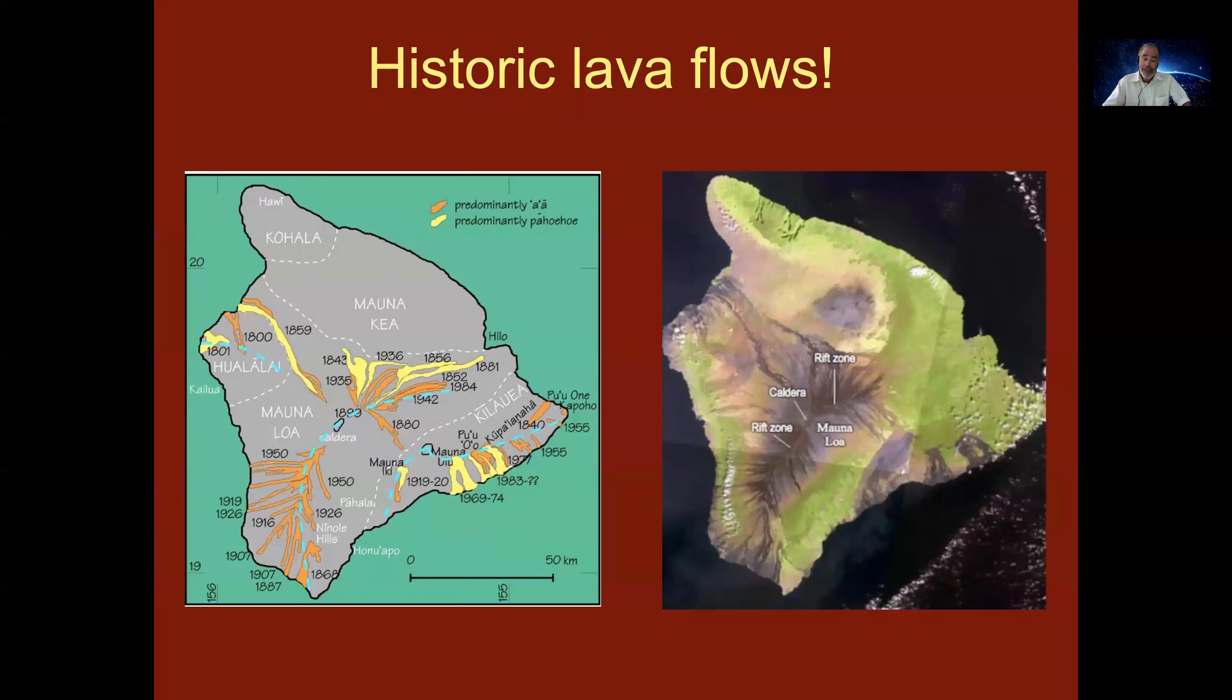But you can quickly compare the different ages, the different dates in which the lava emerged with the overall Hawaii image on the right. You can notice that most of the lava flows come from rift zones and some come from the calderas.